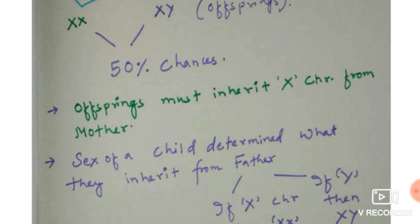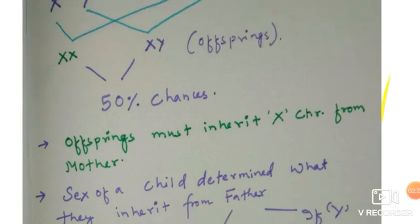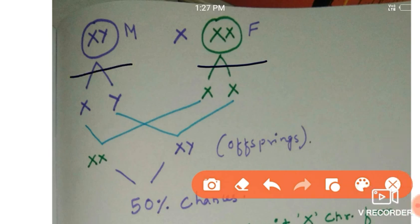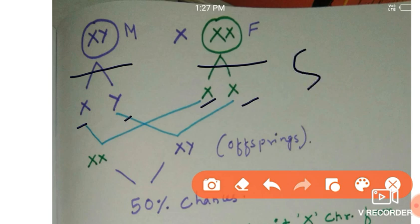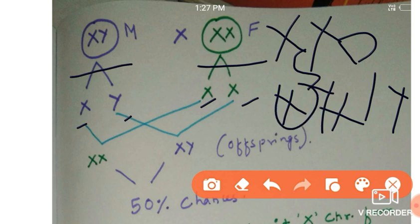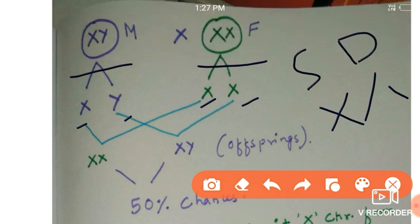An important point is that the offspring must always inherit the X chromosome from the mother. During a cross between XX female and XY male, there is always involvement of the X allele from the mother — whether the child will be a son or a daughter. The Y allele is not compulsory in those crosses. If it is a daughter, then XX — X is needed. If it is a son, then XY — X is still needed. So X is required in both cases.